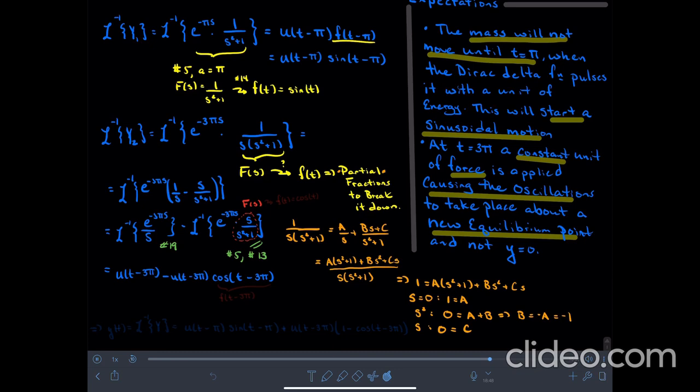then little f of t, or I mean, if this is capital F of s, then little f of t is equal to cosine of t. And so this guy right here is f of t minus 3 pi.